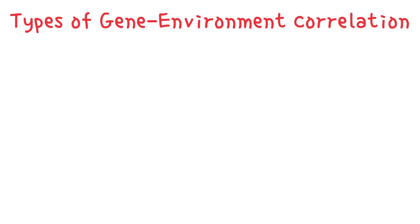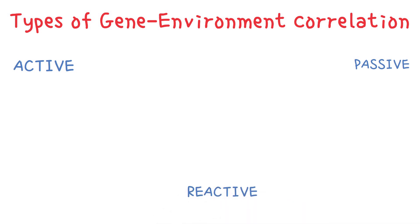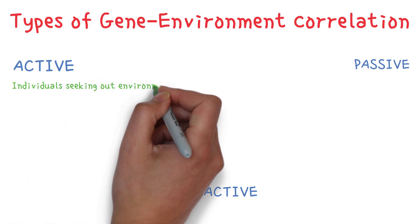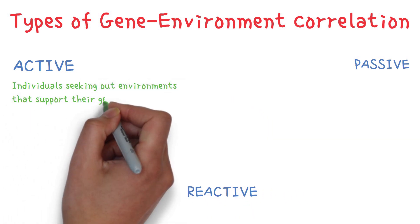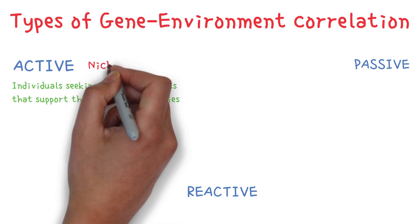The three types of genotype-environment correlations are active, passive, and reactive. We talked about the active, or also called the selective, genotype-environment correlation in the original video. It's basically individuals seeking out environments that support their genetic tendencies. For example, someone with violent tendencies seeking out a gang to join. This is referred to as niche picking.